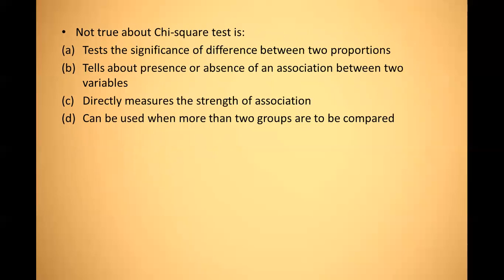Which is NOT true about the chi-square test? Options: it tests significance of difference between two proportions (true), it tells about presence or absence of association between two variables (true), it directly measures the strength of association (NOT true). Chi-square does not directly measure the strength of association — it only indicates presence or absence. So the answer is C.